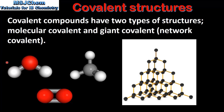On the left we can see some examples of molecular covalent substances. They include H2O which is water, CH4 which is methane, and O2 which is molecular oxygen. Molecular covalent substances exist as individual molecules with a fixed number of atoms. For example, a molecule of water consists of two hydrogen atoms and one oxygen atom, methane consists of one carbon atom and four hydrogen atoms, and oxygen consists of two oxygen atoms bonded together with a double covalent bond.